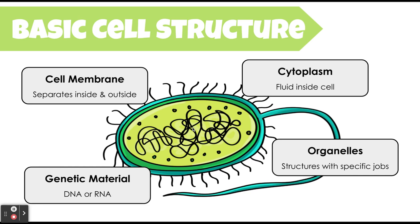The types of organelles we find in every cell might be different depending on what cell we're looking at. But no matter what, cells — even the simplest ones — will have some kind of organelle inside of them. And then lastly, cells need genetic material, because one single cell could be a living organism, and part of being alive is having genetic material, either DNA and/or RNA.